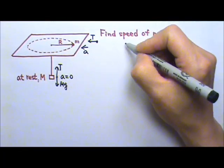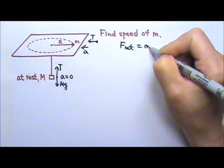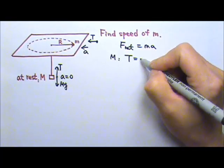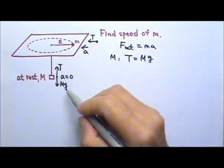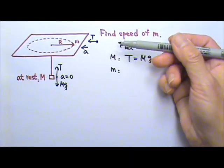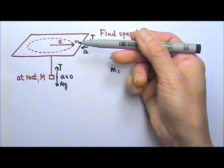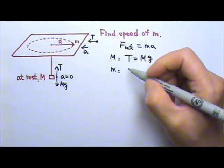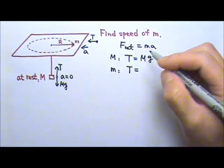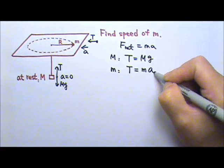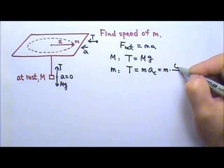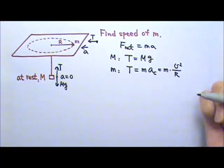Now let's write the net force equals to M A. For the big M, we just have T and M G being equal because the acceleration is zero. For the little m, we just need to write the net force equals to M A in the horizontal direction. The net force in the horizontal direction is big T, the tension, and that equals to M A, and this is the centripetal acceleration, which means we can use V squared over R for it.